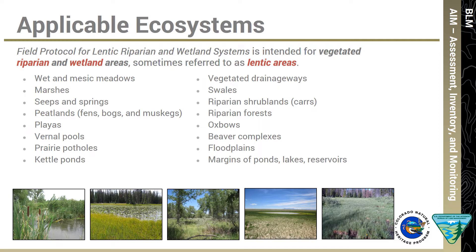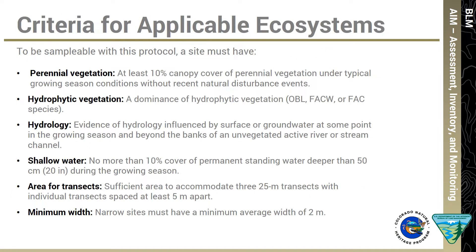To reiterate concepts from a previous presentation, the field protocol for lentic riparian and wetland systems is intended for vegetated riparian and wetland areas, sometimes referred to as lentic areas. These include a variety of different habitats that are influenced by surface and groundwater, from floodplains and beaver complexes to vernal pools and peatlands. For consistent application in the field, the protocol contains a set of six field criteria to determine if a site meets the applicable ecosystems. The criteria are related to vegetation, hydrology, and size. For a more detailed explanation, please listen to the presentation on defining the target population.